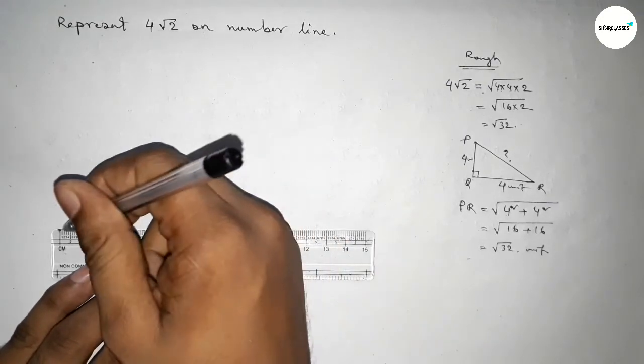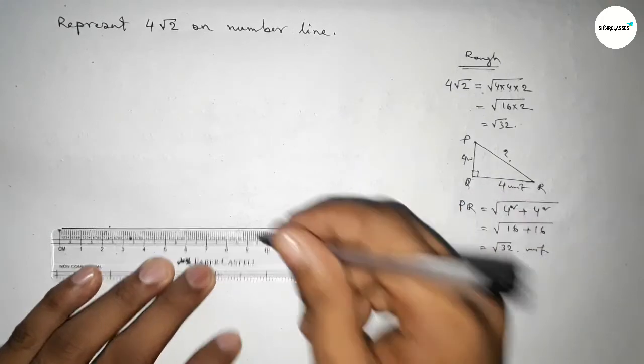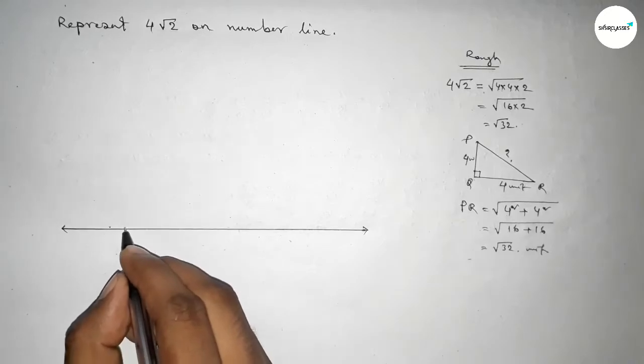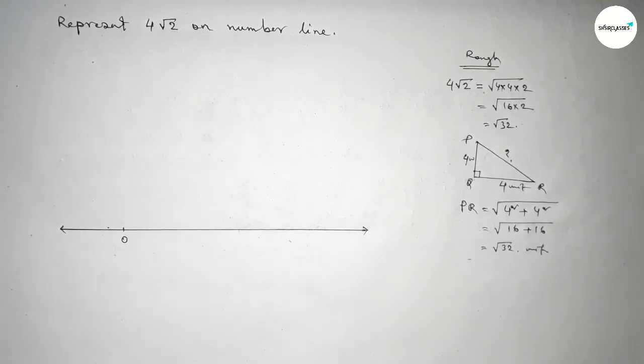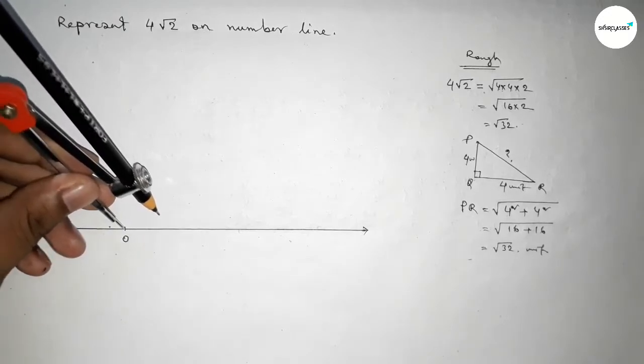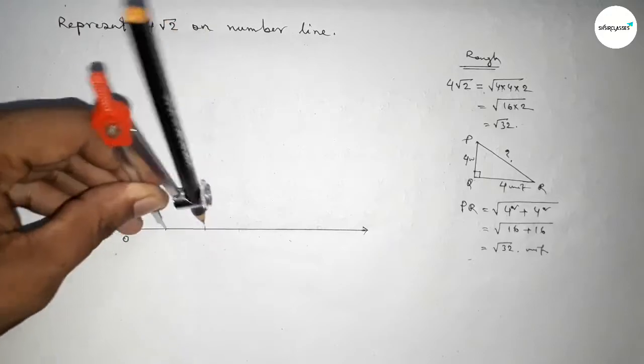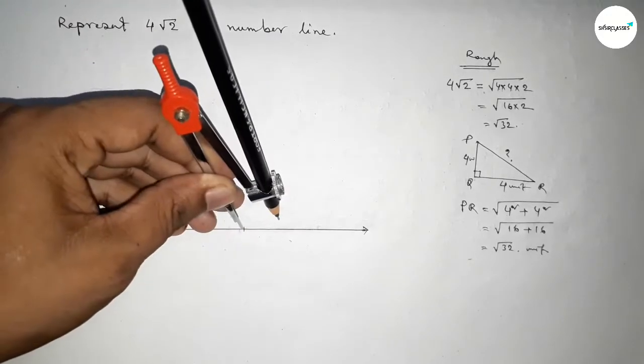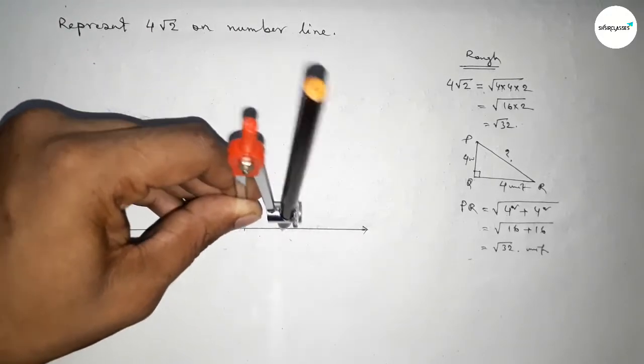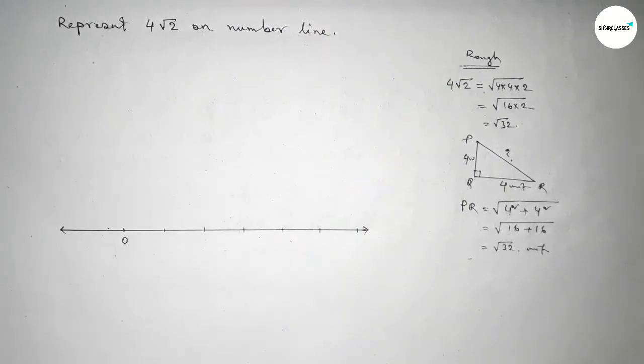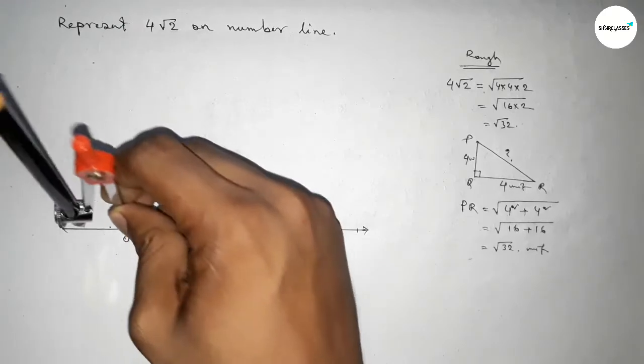Now by using compass, taking any length and mark the numbers on the line by using compass. By this way you can use scale and this length is one unit length. So first marking the numbers on the line.